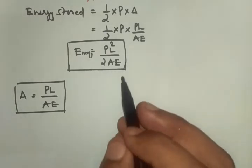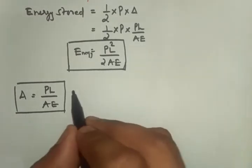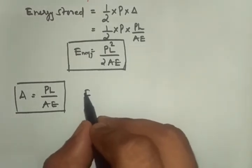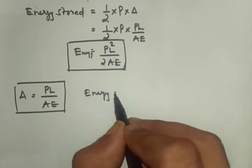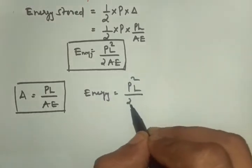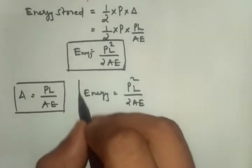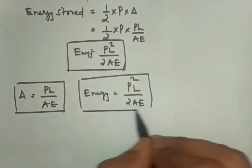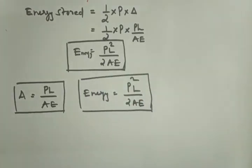We will deal with varying dimensions in the next tutorial. So these are the two most important equations: delta equals PL by AE and energy stored equals P squared L by 2AE. Hope you guys found the equations clear. If you like the video, please share and subscribe the channel for more videos. Thank you.